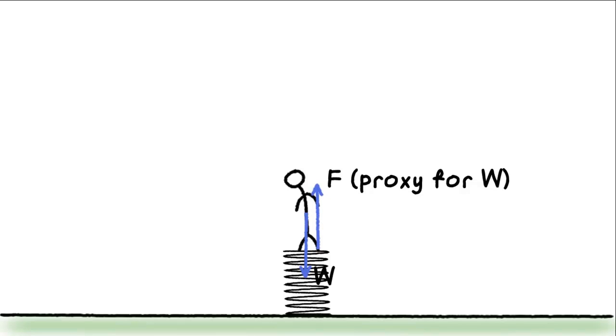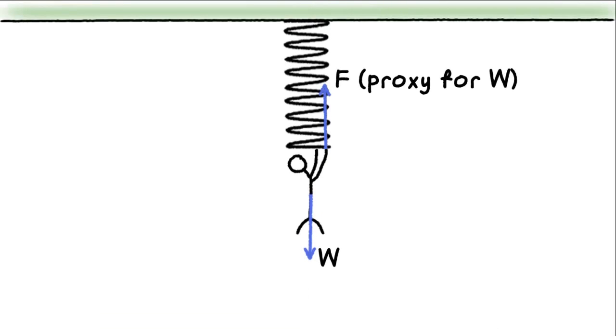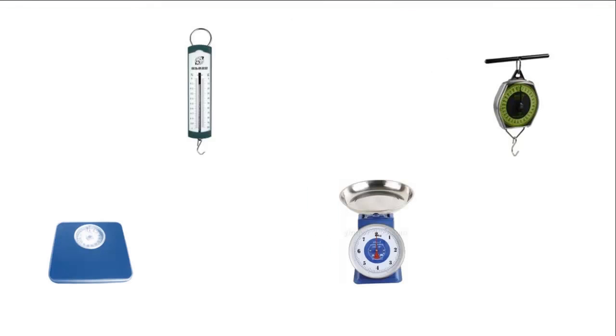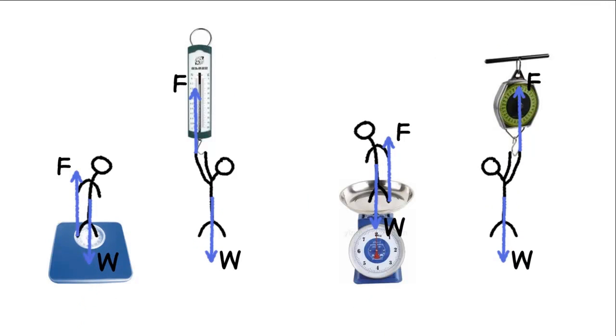Or we hang onto a spring and measure the tension force to be our weight. This is how weighing balances work. The underlying assumption is that the upward contact force is exactly equal to the downward gravitational pull on us.